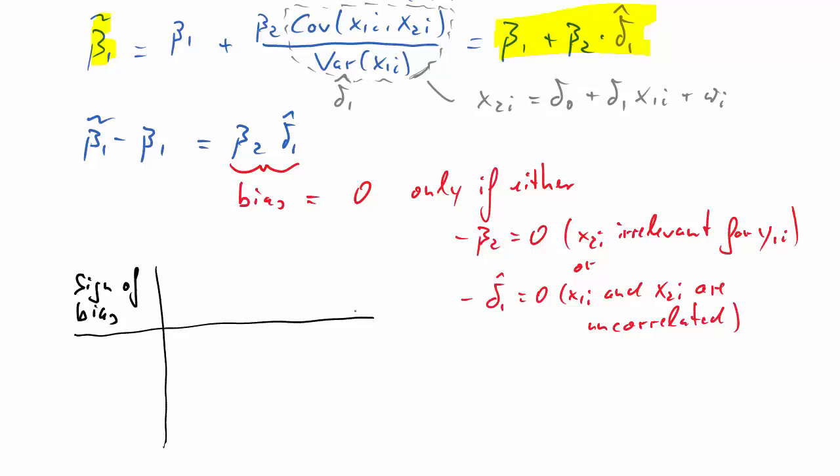Let's think about the sign of this bias term. Beta 2 can be negative or positive, and delta 1 hat can be negative or positive. So we have four combinations, four possibilities here. If beta 2 and delta 1 hat have the same sign, both negative or both positive, the bias will be positive, otherwise it will be negative.